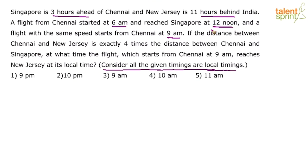We have to be careful — we are going in the reverse direction. So 10 am in India minus 11 hours to get the New Jersey local time. 10 am minus 10 hours will be 8 pm; minus 11 hours will be 9 pm. So the answer is 9 pm. This is how forward and backward — ahead and behind — works.